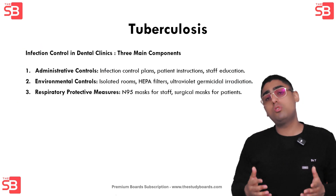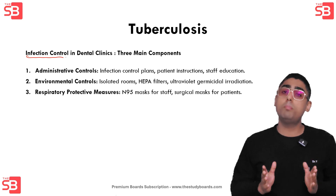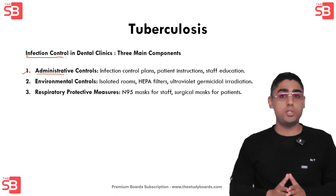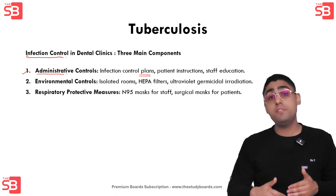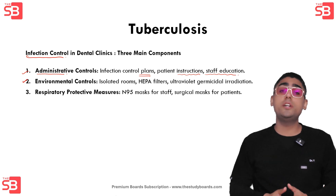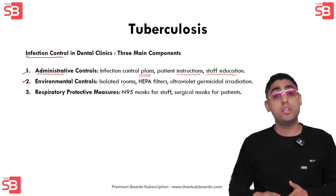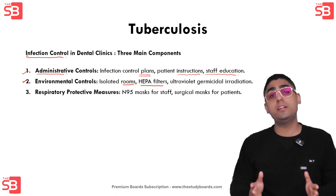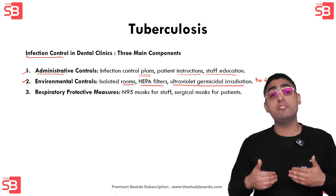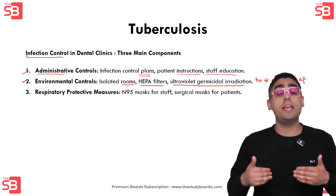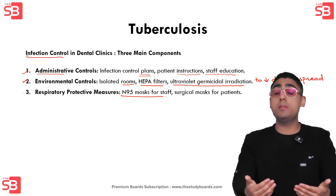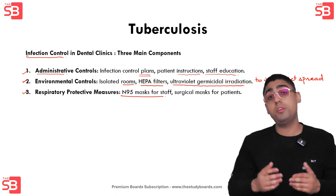There are three main components of infection control in dental clinics. First, administrative controls — implementing TB infection control plans with written instructions to patients and educating staff about TB signs and symptoms. Second, environmental controls — using isolated rooms for suspected TB cases, HEPA filters, and ultraviolet germicidal irradiation to reduce droplet spread. Third, respiratory protective measures — staff should wear N95 masks when dealing with suspected or confirmed TB patients, and patients should wear surgical masks when in the operatory and not being treated.